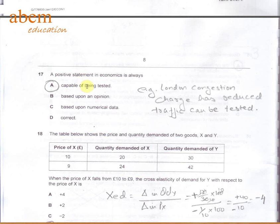Question number 17 is straightforward. We know a positive statement can be tested. For example, London congestion charge has reduced traffic. This can be tested by looking at the figures.